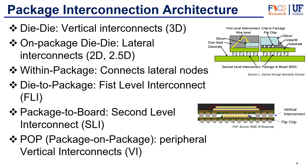The first type of interconnect is the die-to-die vertical interconnect, used for 3D configurations like wafer stacks or memory stacks. We also have on-package die-to-die lateral interconnects used for 2D or 2.5D applications. Then there are within-package interconnects that connect lateral nodes or electrodes. And then we have die-to-package interconnects — your first level interconnect — which are your wire bonds or flip chips connecting the die to the package substrate.